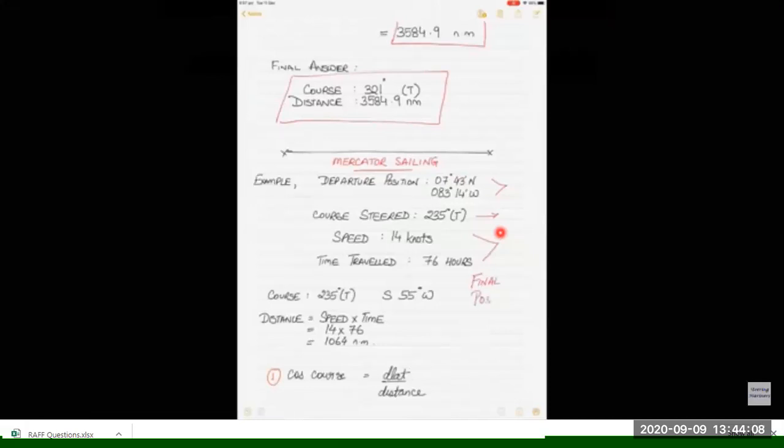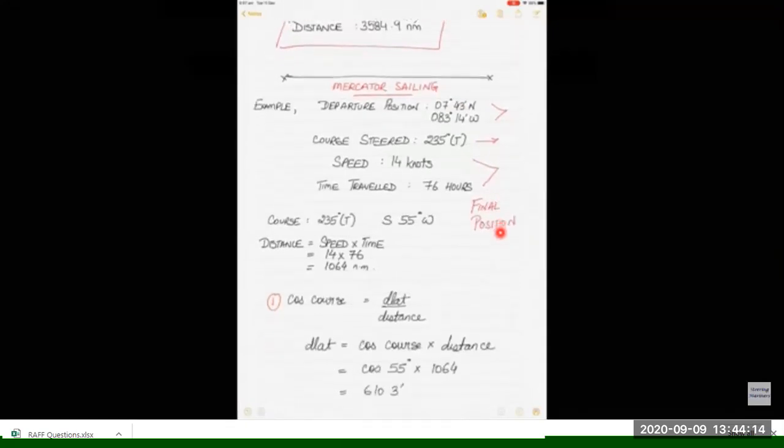We have to find the final position. Let's start with the course. We convert it into quadrant so this will be south 55 degrees west.